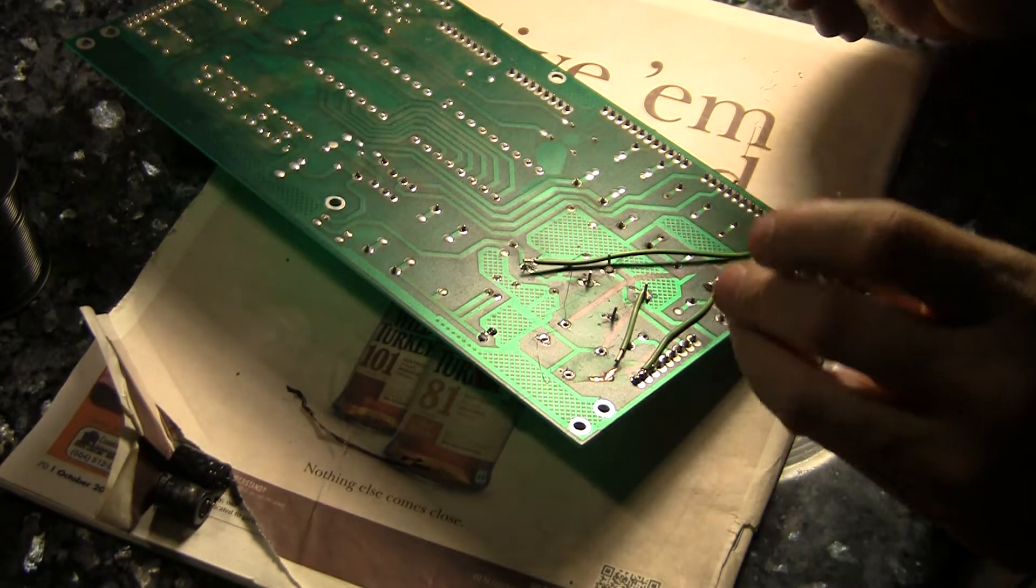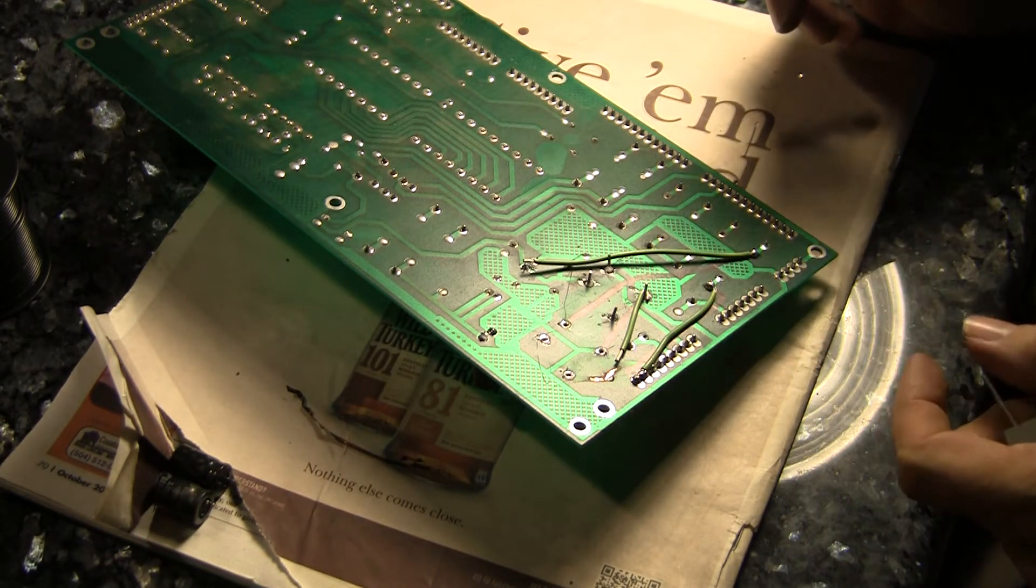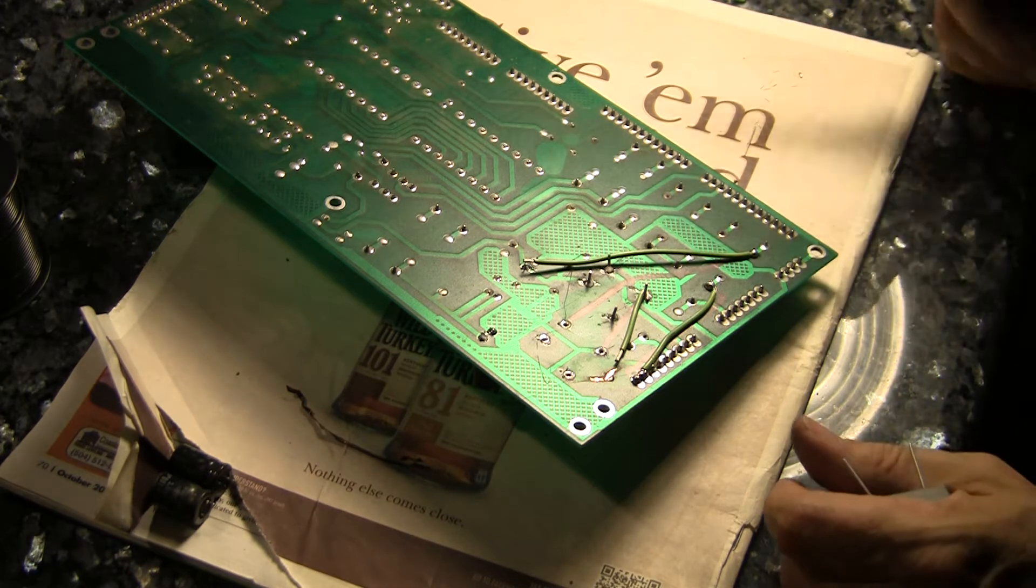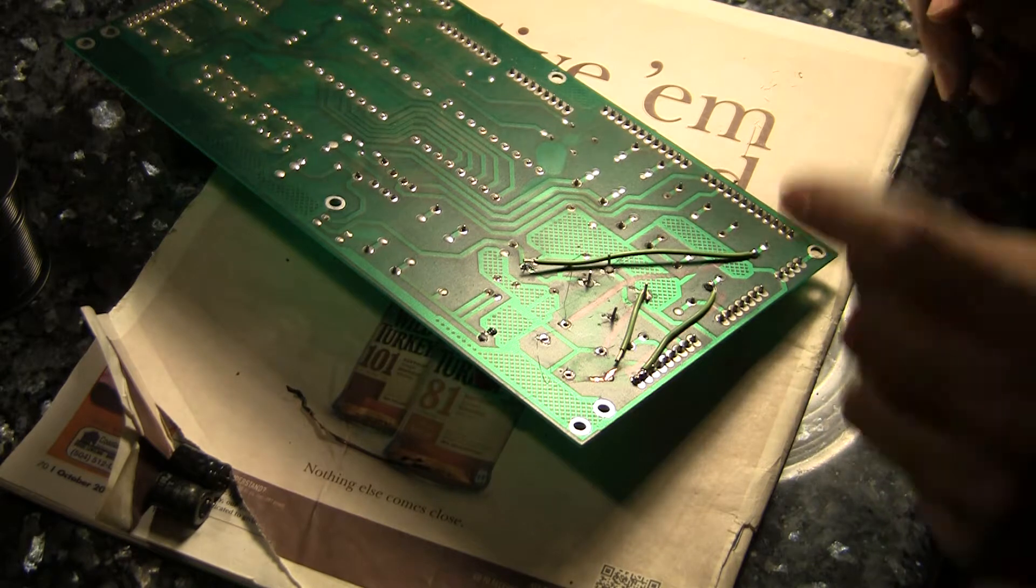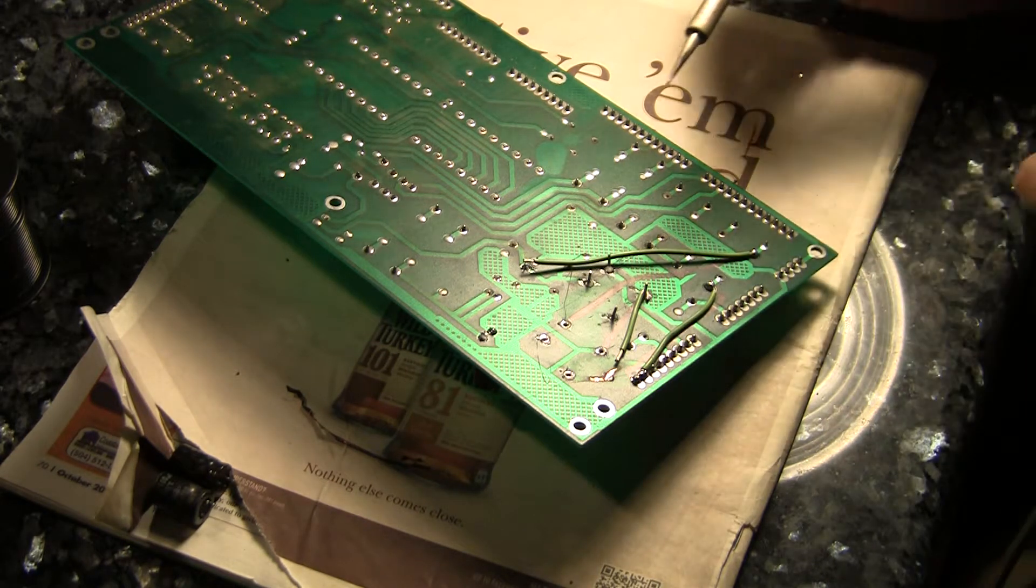Alright, welcome back. Here we are working on the Williams System 11B Auxiliary Driver Power Board. I've put one of the bridge rectifiers in and I've replaced two of the electrolytic capacitors.